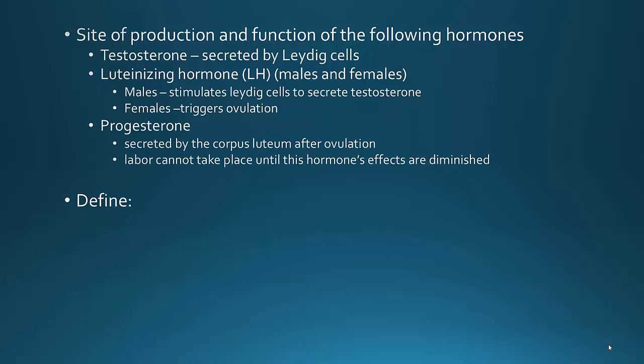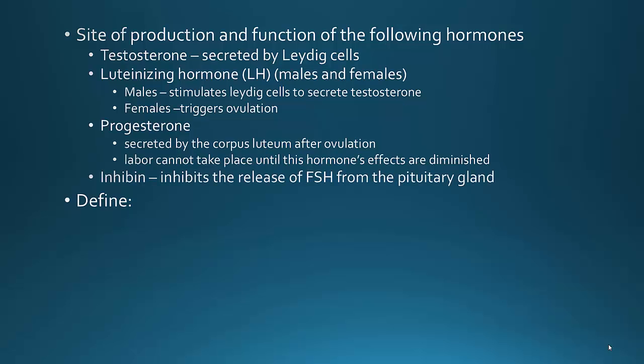Progesterone is found in females and is secreted by the corpus luteum after ovulation. However, progesterone levels need to drop in order for labor to take place — labor cannot take place until this hormone's effects are diminished. The last hormone you need to know here is inhibin. Inhibin inhibits the release of FSH from the pituitary gland — it's going to stop and slow it down.